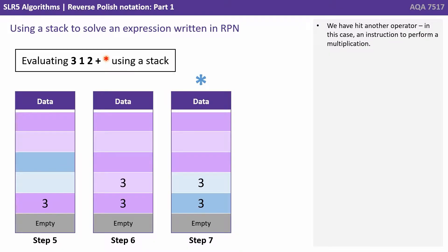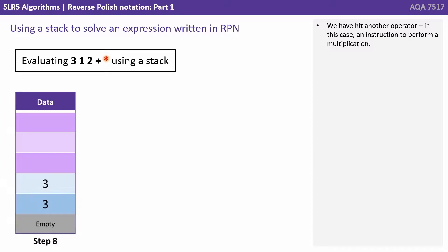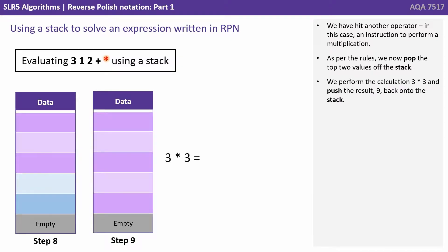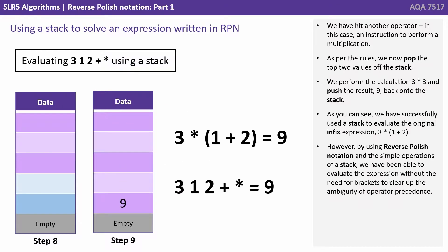We've now hit another operator, in this case an instruction to perform a multiplication. Once again as per the rules we pop the top two values off the stack. We perform the calculation 3 times 3 and push the result 9 back onto the stack. As you can see we've successfully used a stack to evaluate the original infix expression 3 times 1 plus 2. However, by using reverse Polish notation and the simple operations of a stack, we've been able to evaluate the expression without the needs for brackets to clear up the ambiguity of operator precedence.